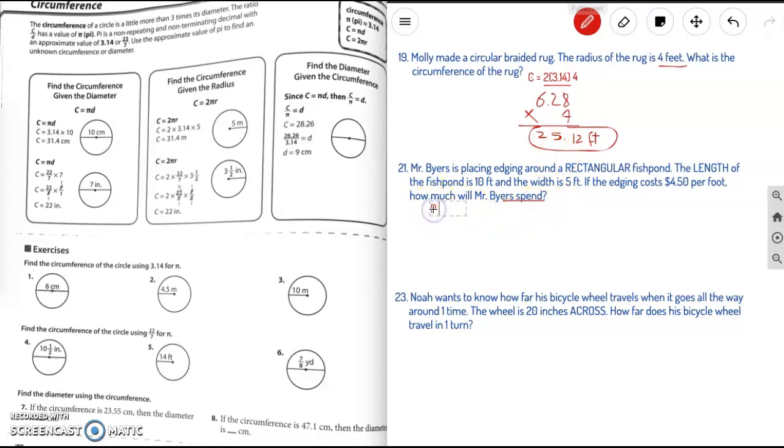So, that is P equals 2 times L plus 2 times W. What's the length? 10 feet. And what's the width? 5 feet. Very good. 20 plus 10, 30. That's not it though. That's the perimeter of the fish pond. And it costs $4.50 per foot. So, what are we going to do next?